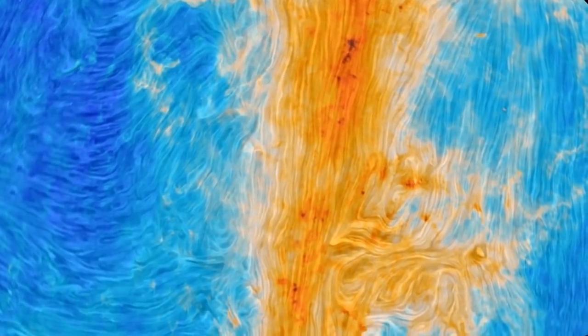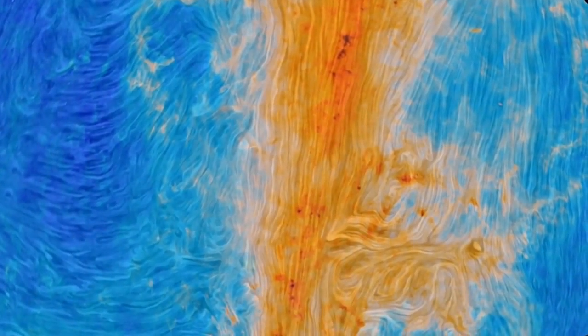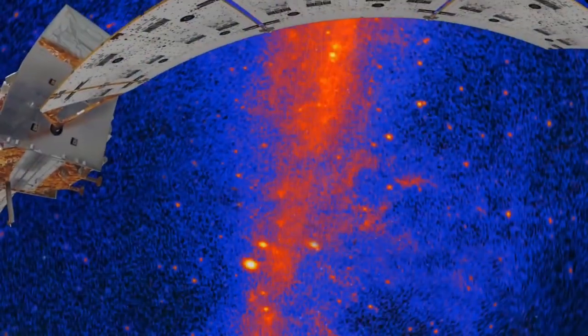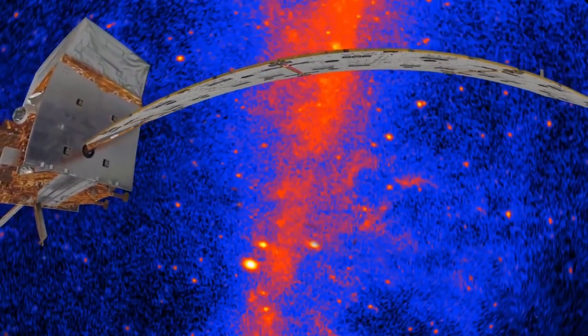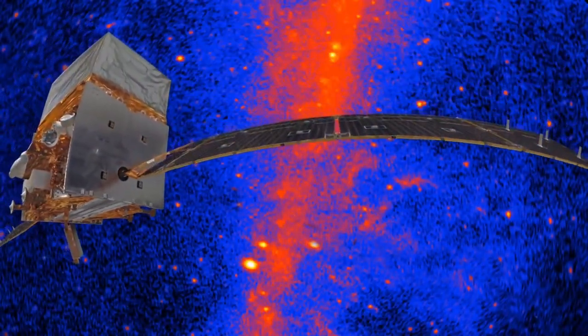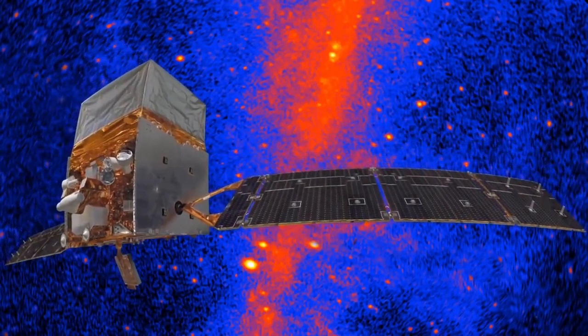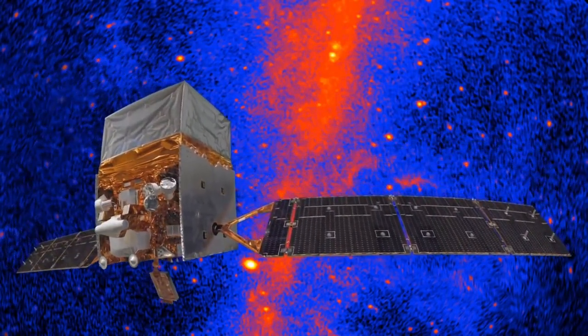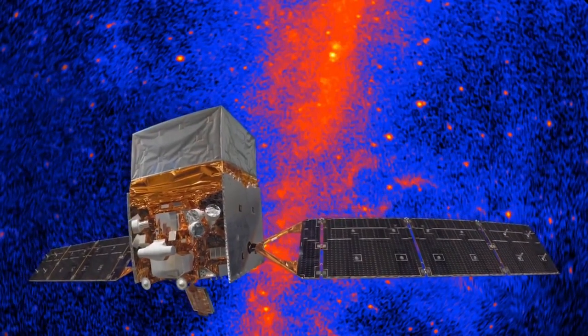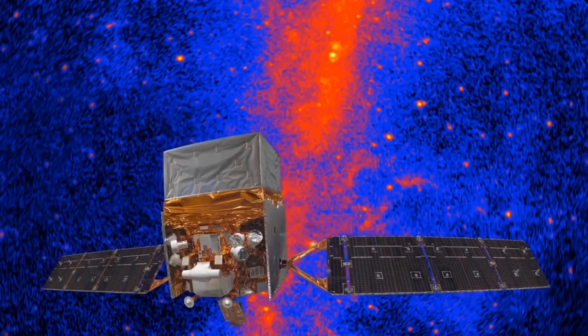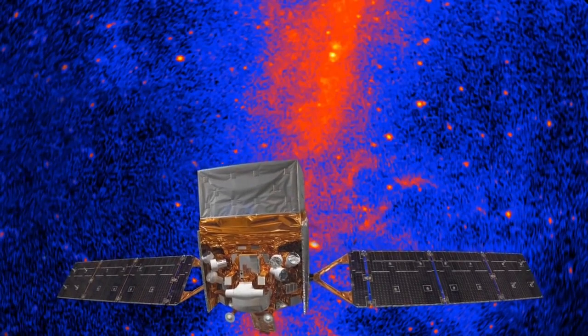Our galaxy also looks very different in gamma rays, the most energetic part of the spectrum. Orbiting gamma ray observatories like Fermi can pinpoint the most energetic light sources in the universe. These are often collapsed stars with tightly wound magnetic fields focusing the light they emit.